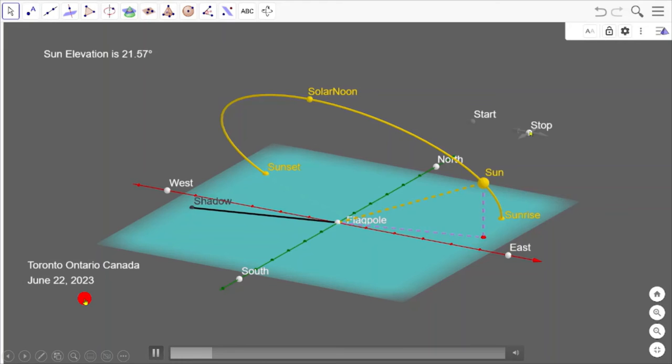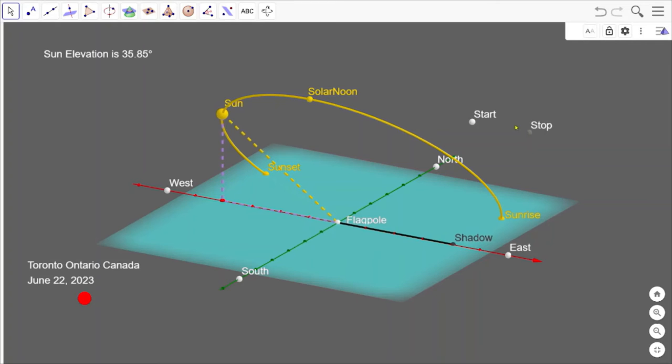So the Sun comes up and it crosses the line of latitude, then it crosses the meridian at solar noon, then it crosses the line of latitude again, and then it goes on to sunset.